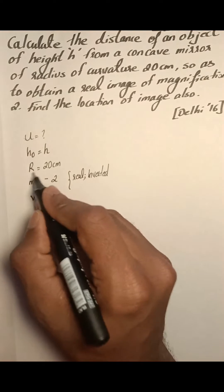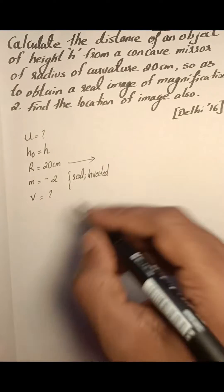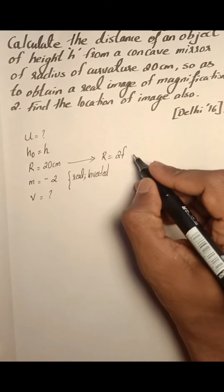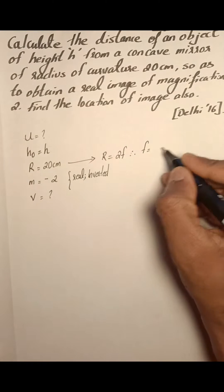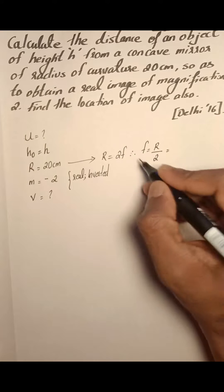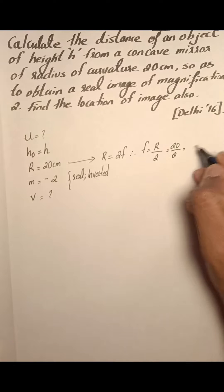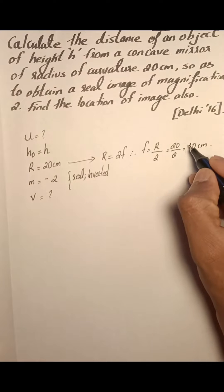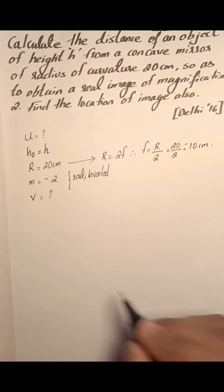The parameters given are radius of curvature. The theory is that radius of curvature is equal to 2 times focal length. Therefore, focal length equals radius of curvature by 2. So it becomes 20 by 2 equals 10 centimeters. It is a concave mirror. For a concave mirror, the focal length is negative, so it is minus 10 centimeters.